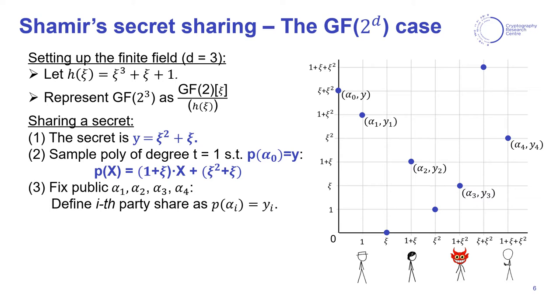Once this is done, by fixing other public values α₁ up to α₄, each of them corresponding to parties 1 to 4, we have defined their share of the secret y as the evaluation of the polynomial P at this point αᵢ. So we will use this double bracket notation to define the secret sharing of the value y, and sometimes we will have this sub-index t to denote the degree of the polynomial that was used to share the secret.